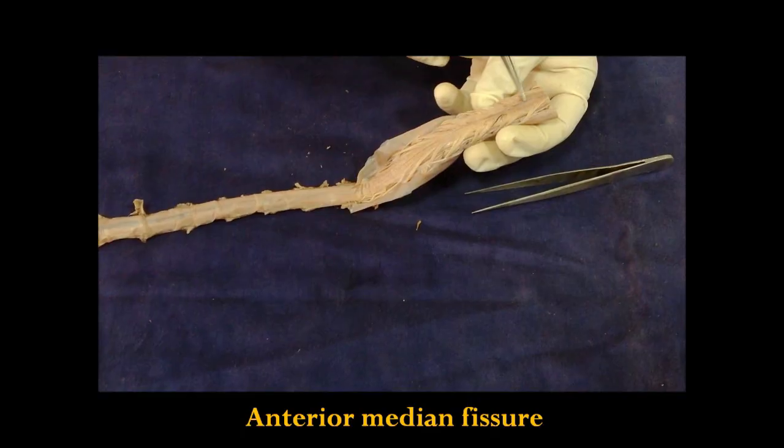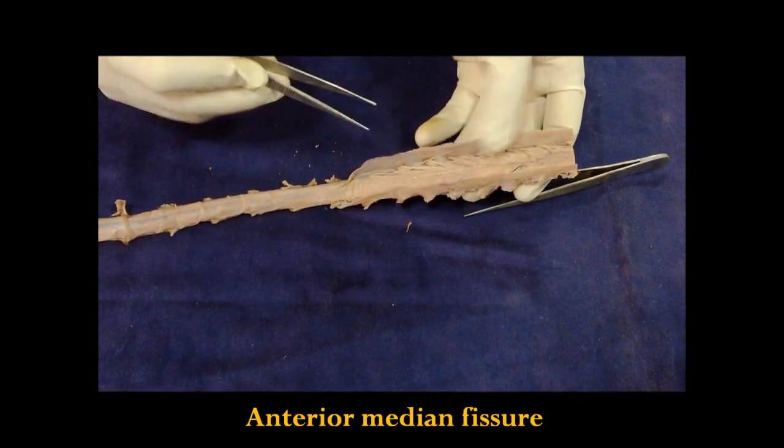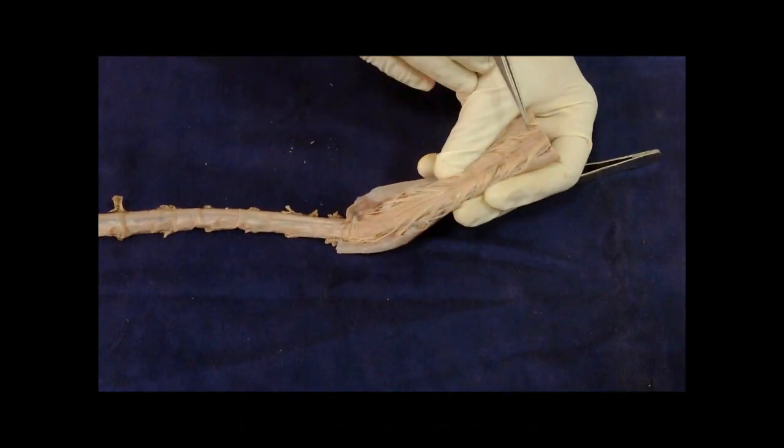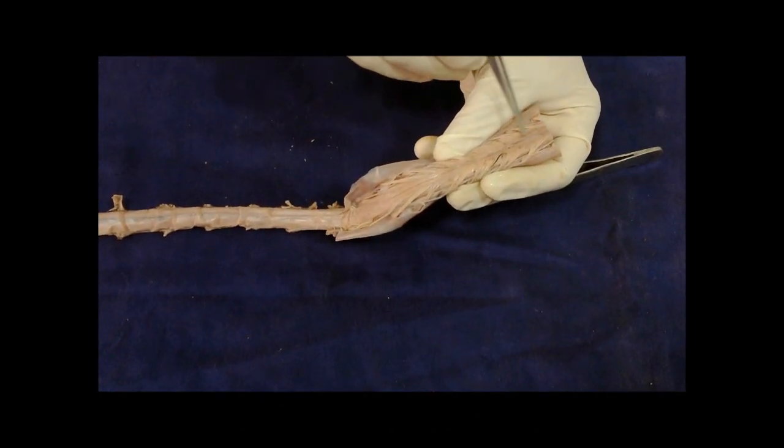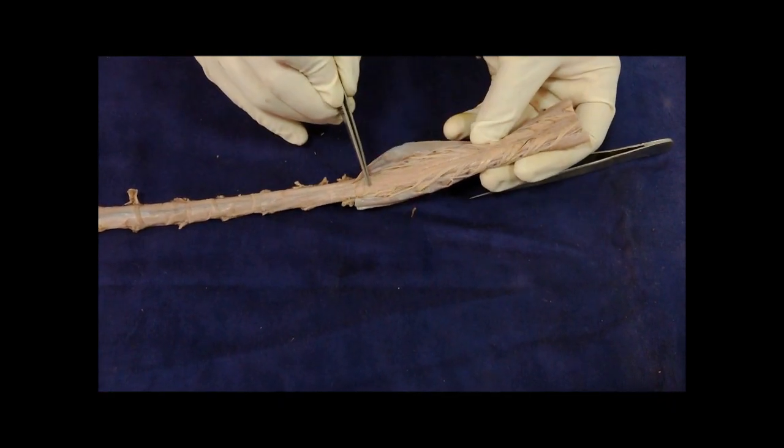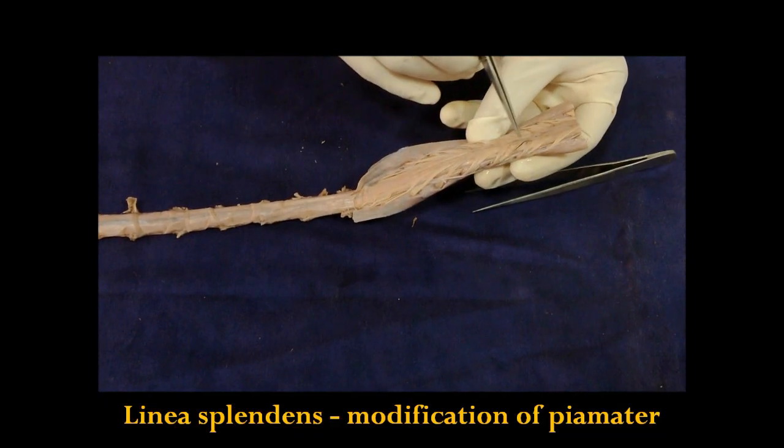There is a fissure here called anterior median fissure which is occupied by a glistening band called linea splendens. You can see that silvery band in the anterior median fissure. That is called linea splendens and it is a modification of pia mater.